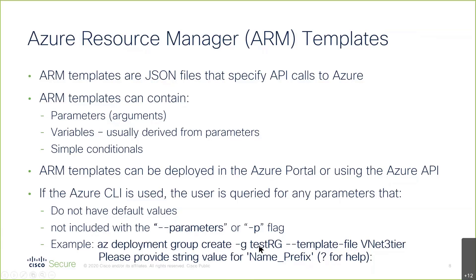You can see we'll talk about the resource group in a minute. Here's a template — you can either put the parameters into the CLI command or you can have them with default values. If they don't have default values and you haven't put them in the command, like this name prefix, when you run the CLI it will ask you for the value of the parameter. Then it will generate a version of the template hardwired with that value and send it to Azure.